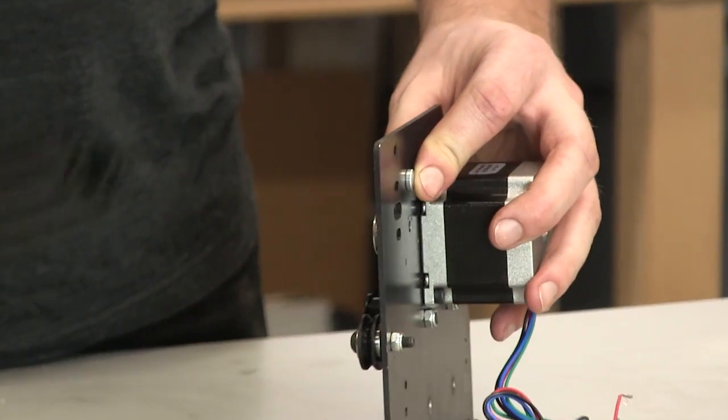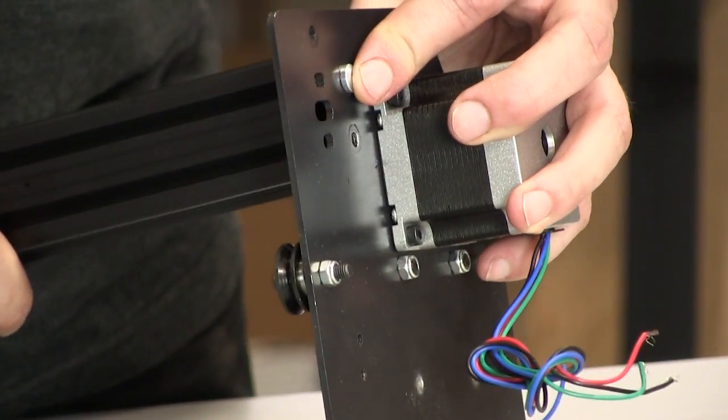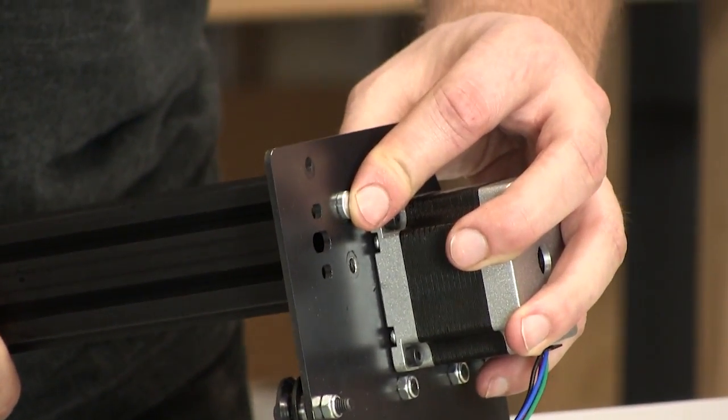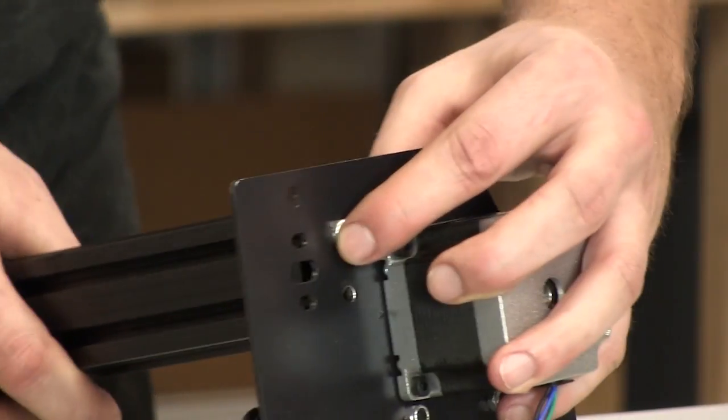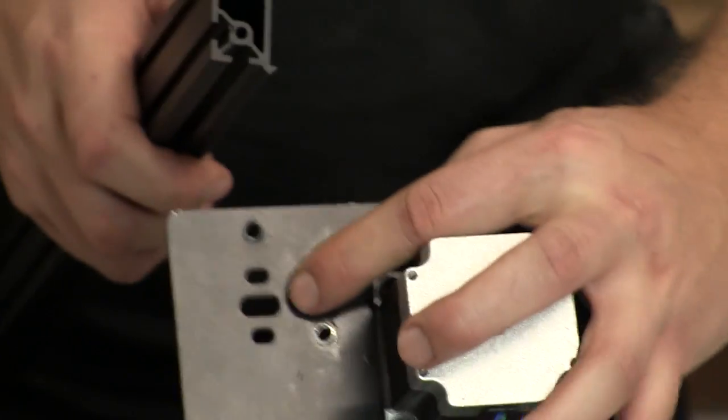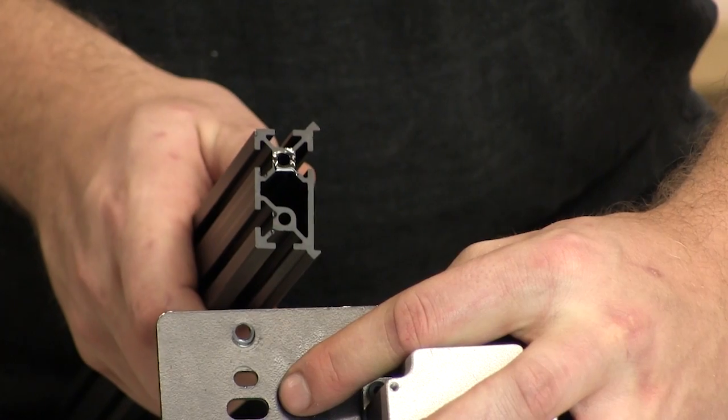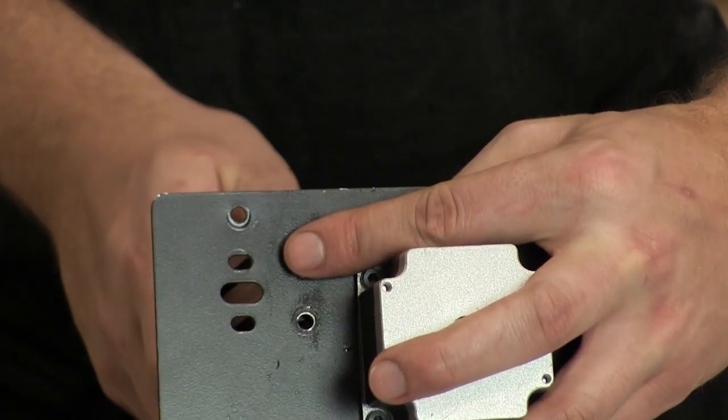These screws are much easier to put in if you use a little tapping fluid. You'll see here the two holes that I'm going to tap. And you can see the orientation of the maker slide. You want the V-rails to point out.